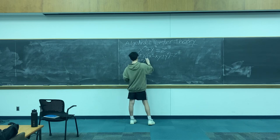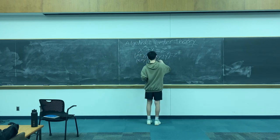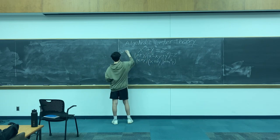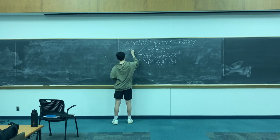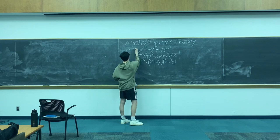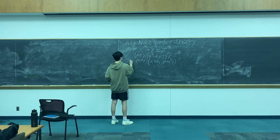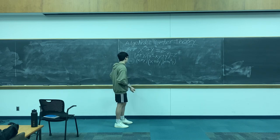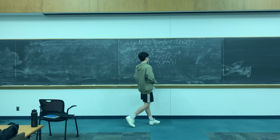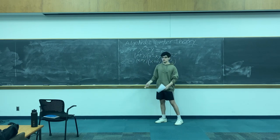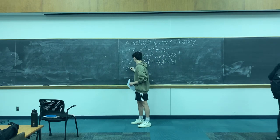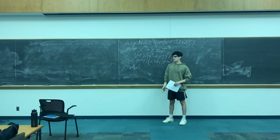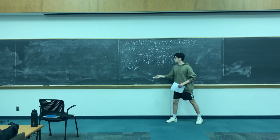We can factor it as (x plus y) times (x plus ωy) times (x plus ω²y), where ω is the cube root of unity. So we've moved from integers to this new space — we've moved to Z adjoined ω, where ω is the primitive cube root of unity. Now each of these elements is a core element of this domain. Z adjoined ω is just the set of a plus bω, where a and b are integers, ω is the cube root of unity.